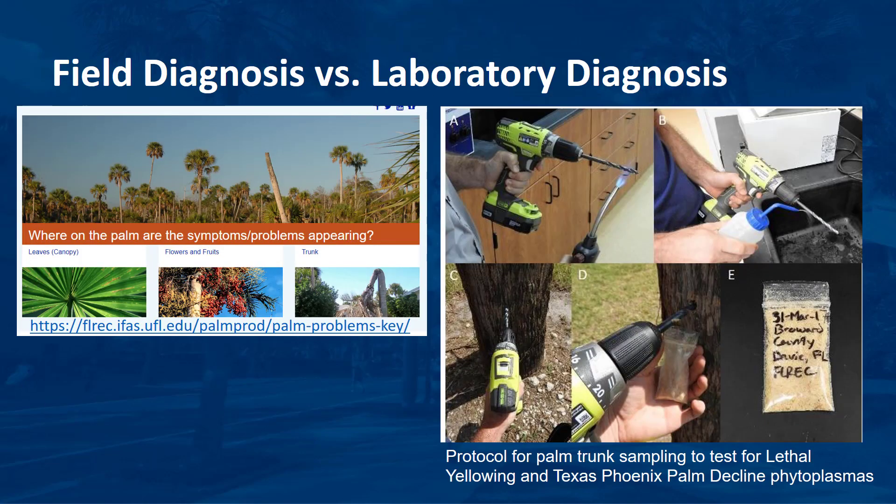Since few people have immediate access to analytical laboratories, most diagnostic keys are based solely on visible symptoms. Fortunately, visible symptoms are sufficient to diagnose many palm problems. Visual inspection is also the first step in determining which diagnostic lab to use for further analysis.